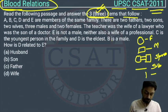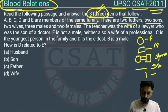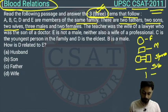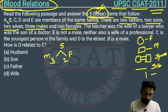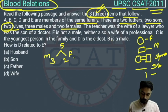The question states: A, B, C, D, E, R are members of the same family. There are two fathers, two sons, two wives, three males, and two females. So there are five total members — three male and two female, and two of them are married.